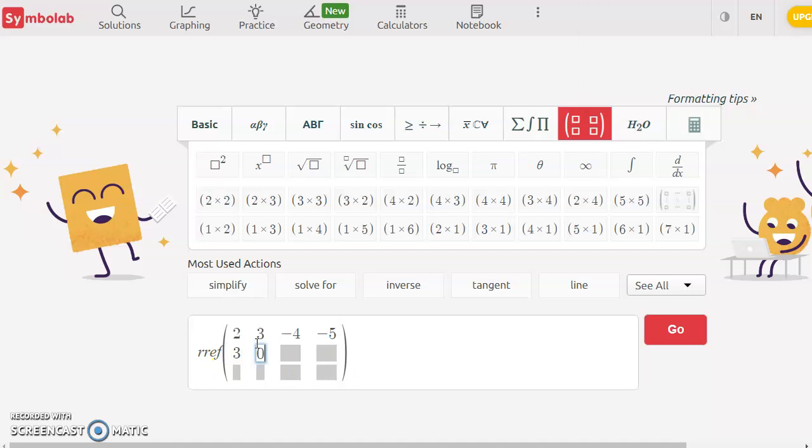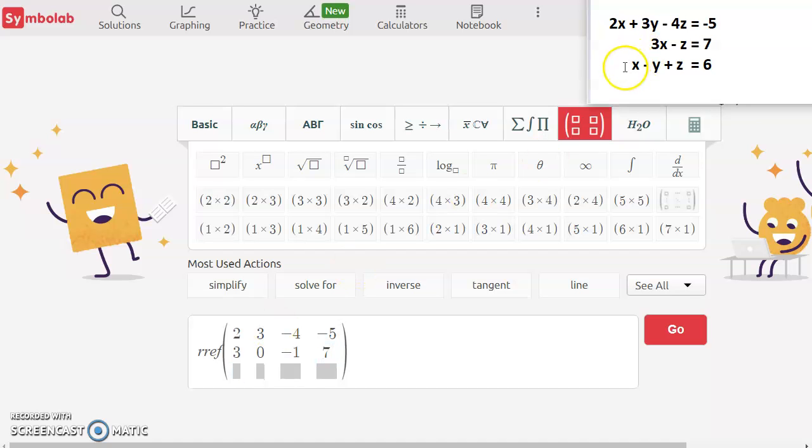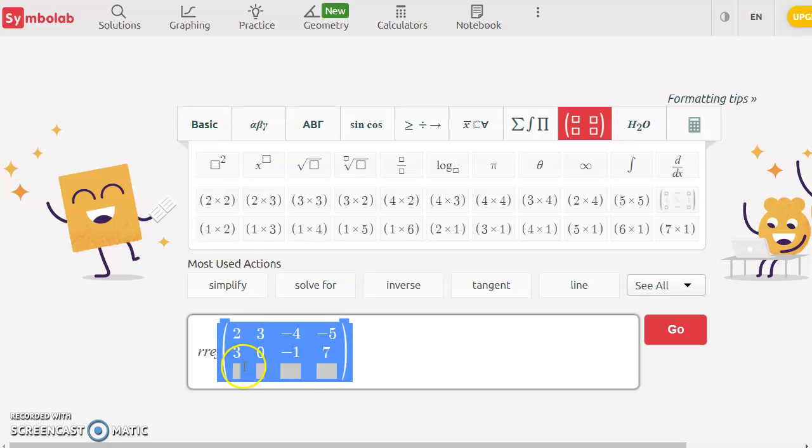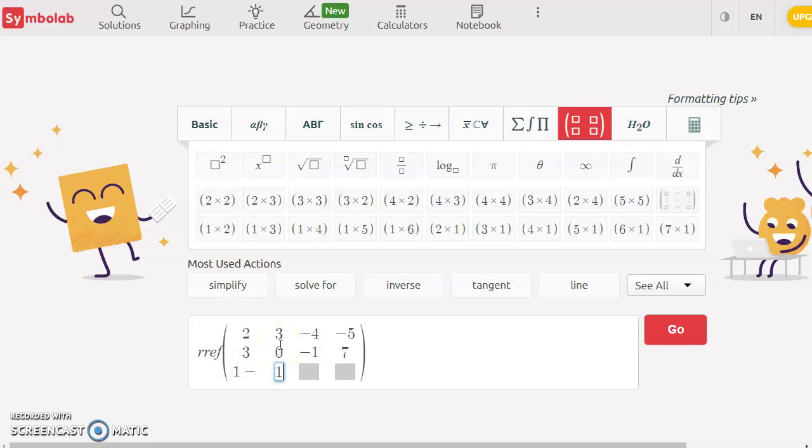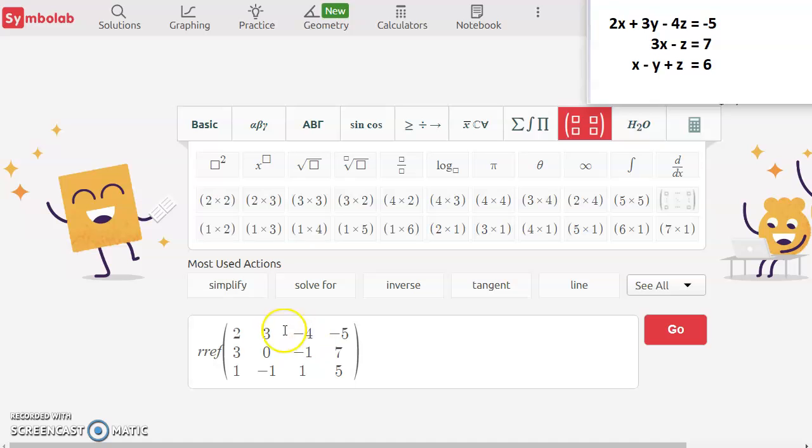And then in our third row, we've got 1x, negative 1y, 1z, equaling 6. So we've got 1, negative 1. Oops. 1 and 6. My negative went in the wrong spot there, so let's fix that. There we are. Let's double check. Oh, that should have been a 6. Let's double check that looks right. Yeah, looks good.